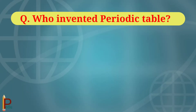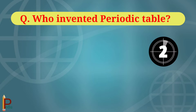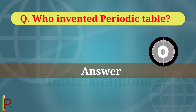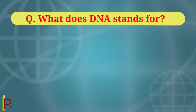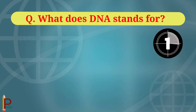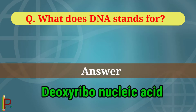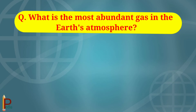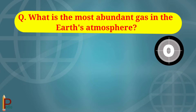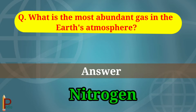Who invented the periodic table? The answer is Dmitri Mendeleev. What does DNA stand for? The answer is deoxyribonucleic acid. What is the most abundant gas in the Earth's atmosphere? The answer is nitrogen.